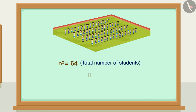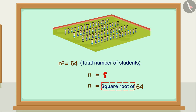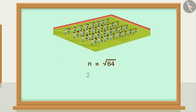Here the square of n is given as 64, but we have to find the value of n — that is, a number whose square is equal to 64. A number whose square is equal to 64 is called the square root of 64. For example, if 2 times 2 is equal to 4, then the square root of 4 is 2.